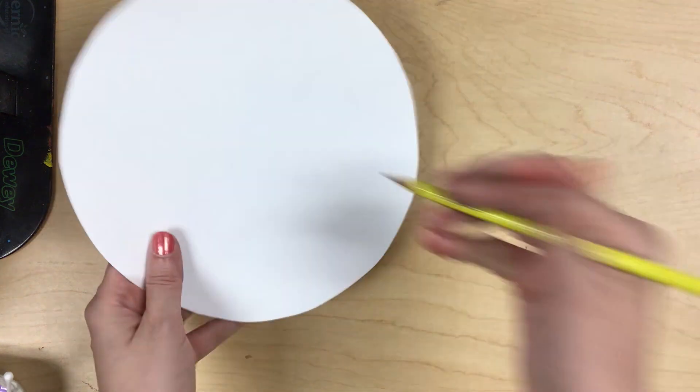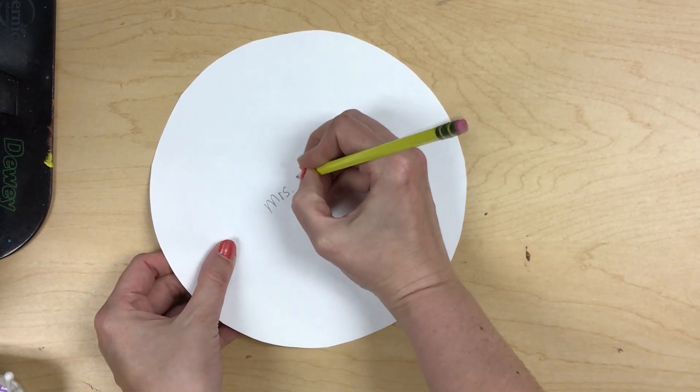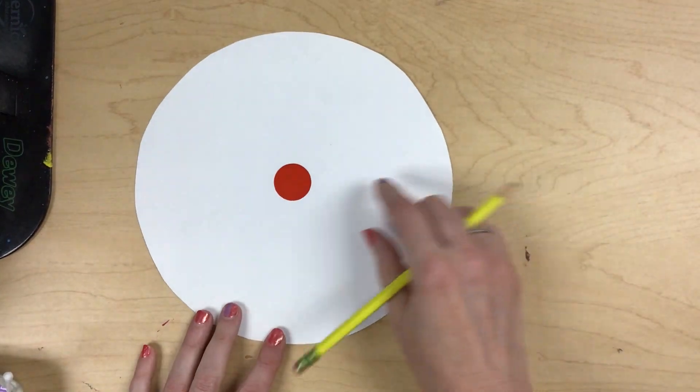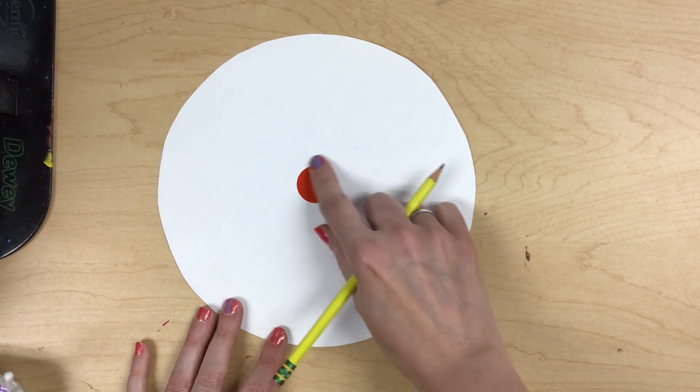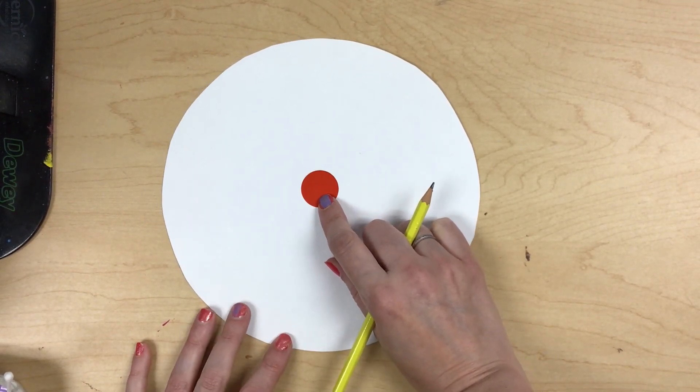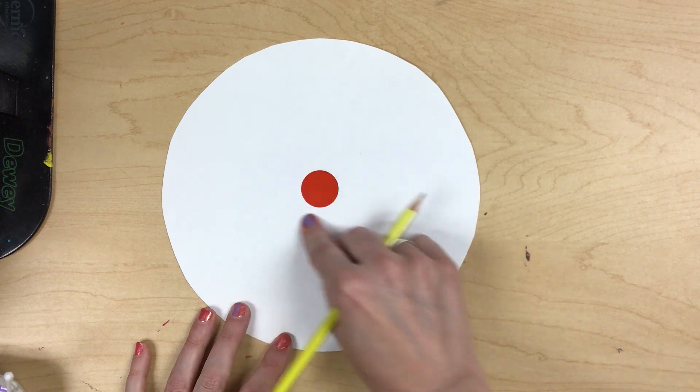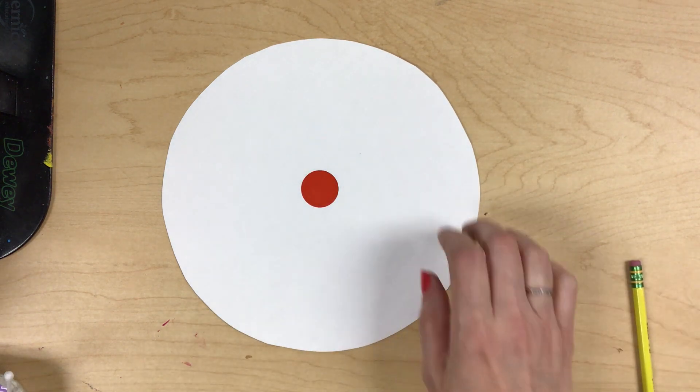On the back you're going to write your name and next you'll notice that I have put a dot sticker in the center of your paper. You will start painting around there with the colors that you choose.